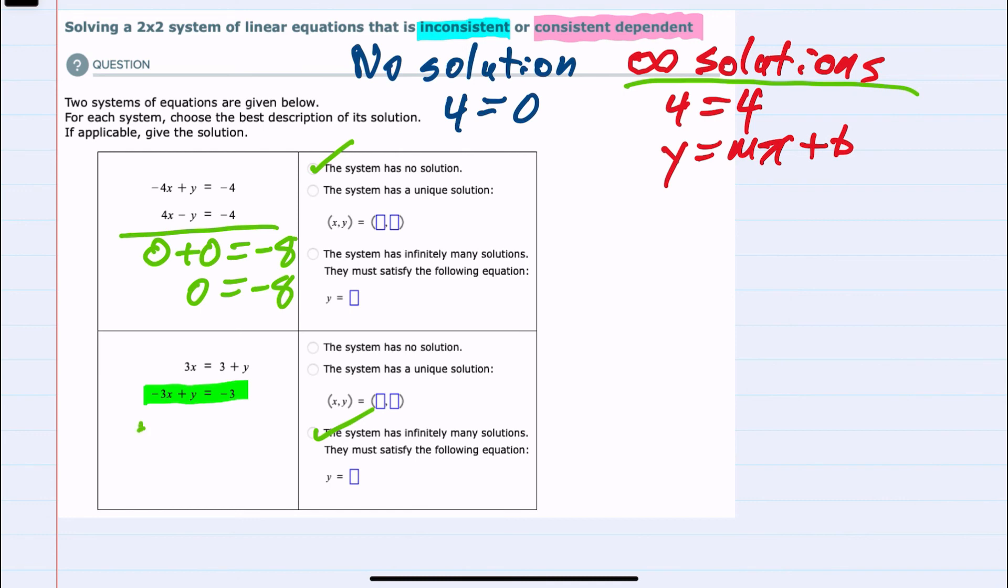To solve this for y, we would need only add the 3x to both sides. On the left-hand side, the 3x and the minus 3x would cancel, leaving me with y. On the right-hand side, I have a minus 3 plus a 3x. So just to put that in standard form, I would write the 3x first, 3x minus 3. This would be our equation for all of our solutions.